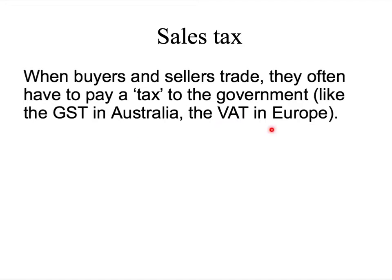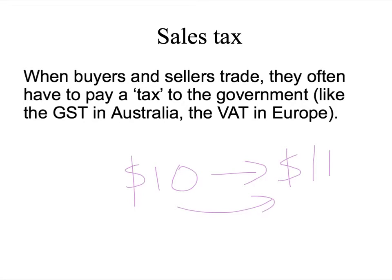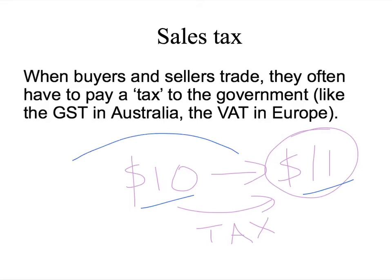Unlike Australia and Europe where the shelf price includes the tax, when you go to the United States you have a shelf price that might be say ten dollars, but when you go up to the cash register you might actually be paying say eleven dollars. The difference is the tax — that's pretty much how the GST and the VAT also work, except in Australia or Europe eleven dollars would be the price on the shelf. What happens with the one dollar difference between the ten dollars and the eleven dollars? Well that one dollar goes off to the government — that's the government's tax revenue.